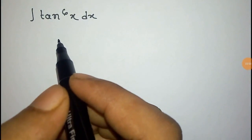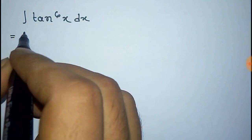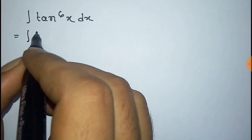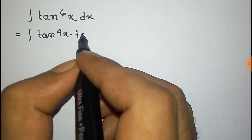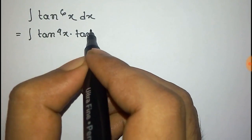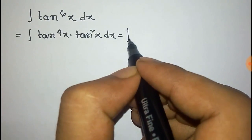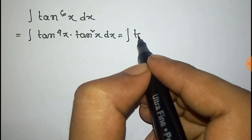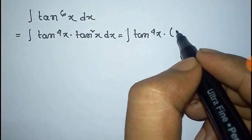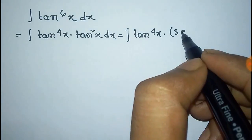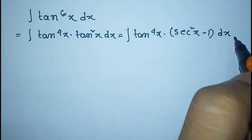We have to integrate tan to the power 6x dx. We can write this tan⁶x as the product of tan⁴x into tan²x dx. This is equal to tan⁴x, and we can write tan²x as sec²x minus 1, into dx.